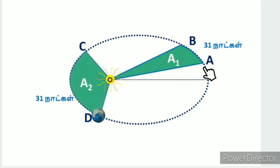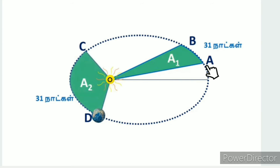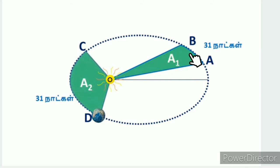For example, from January 1 to January 31 is a one-month interval. The area swept is area AOB, and that equals area A1.